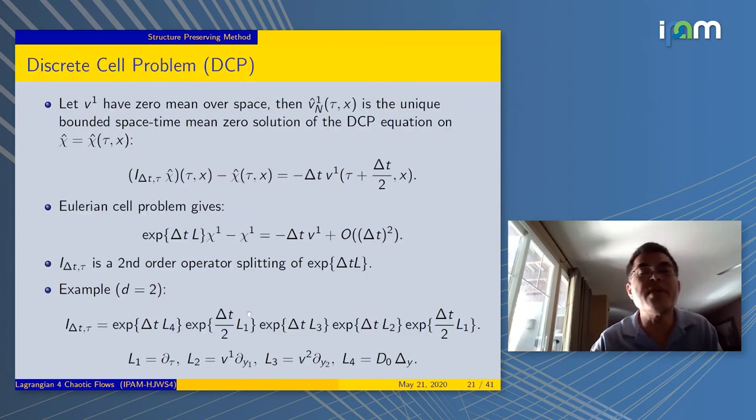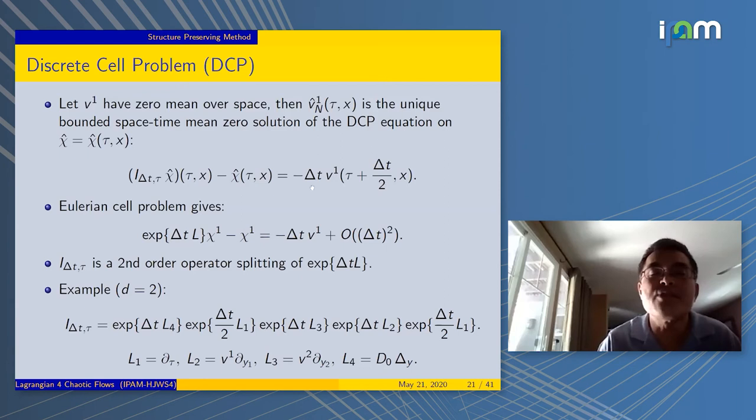If we relate x_n to x_0, we get a sum. This sum motivates us to define a function, except we sum it to infinity and we add a time shift from τ. This function is well defined. The series is summable because we can control it with the discrete invariant measure. When you calculate the second moments, that sum would appear. It turns out this sum is a space-time mean zero solution of the following equation: I_δt,τ minus chi equals delta T V_1(τ) plus delta T over 2 x.